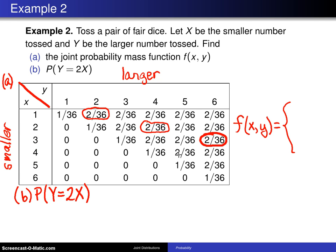you get that. So this basically becomes just adding up f of 1, 2 plus f of 2, 4 plus